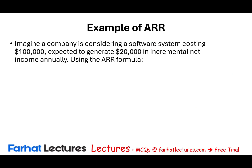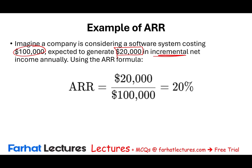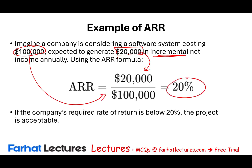Let's look at an example. Imagine a company is considering a software system costing $100,000, expected to generate an additional $20,000 in incremental net income annually. Using the formula — incremental net income divided by the investment — we get an ARR of 20%. Is this acceptable? It all depends on our required rate of return. If it's above 20%, we reject; if it's below, this is good.